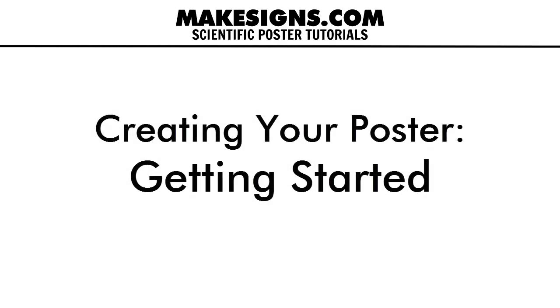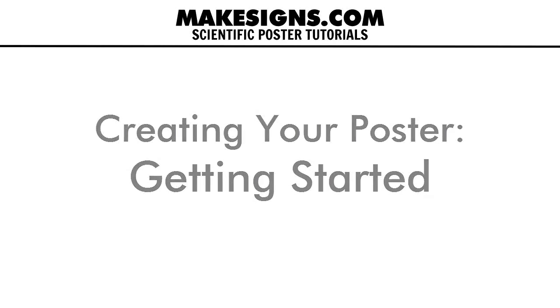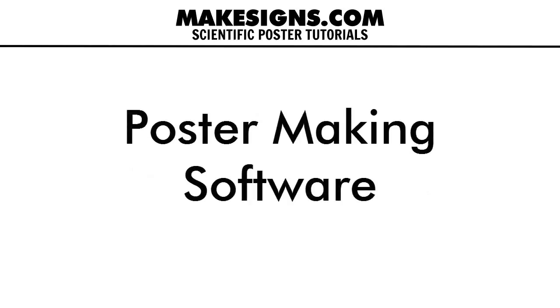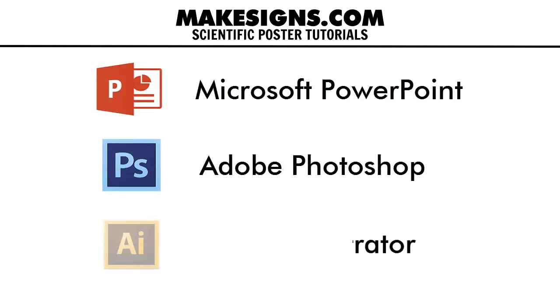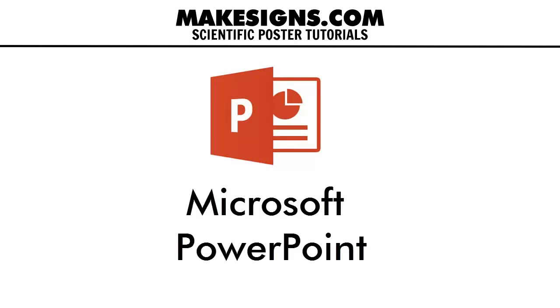The very first thing you need to do when making a scientific poster is decide which software to use. You've got several different options. Popular programs include Microsoft PowerPoint, Adobe Photoshop, or Illustrator. We prefer using Microsoft PowerPoint — it's incredibly easy to use, there are tons of free templates you can download online, and just about everyone already has a copy of it.